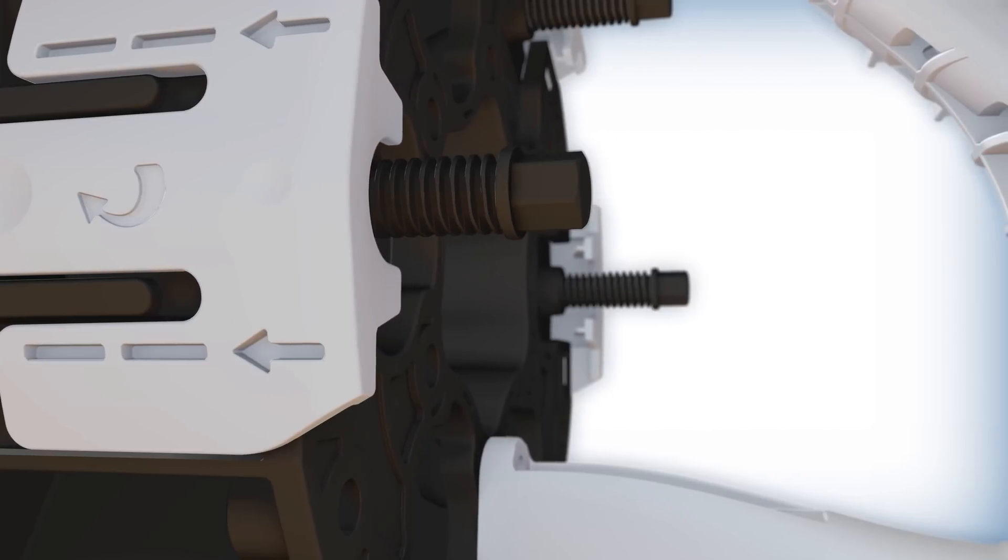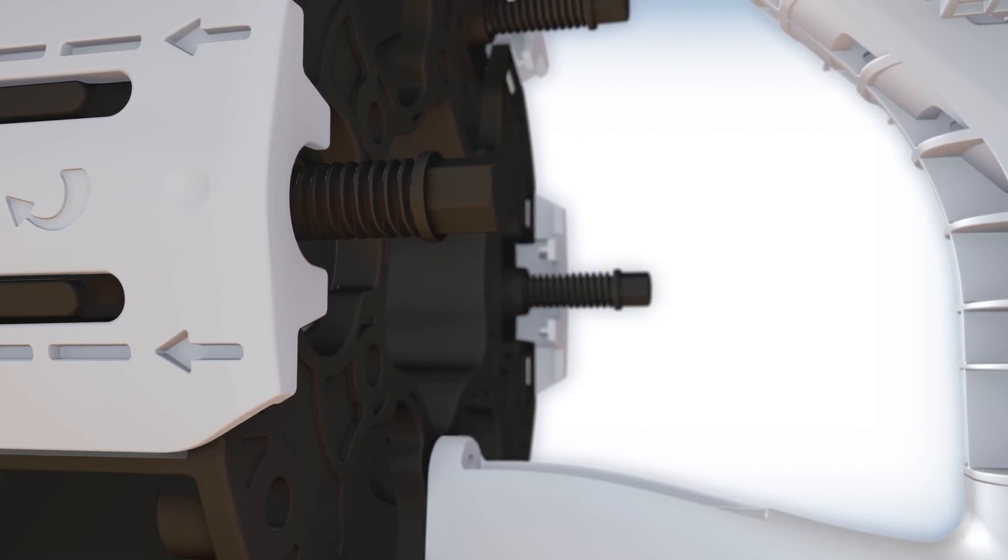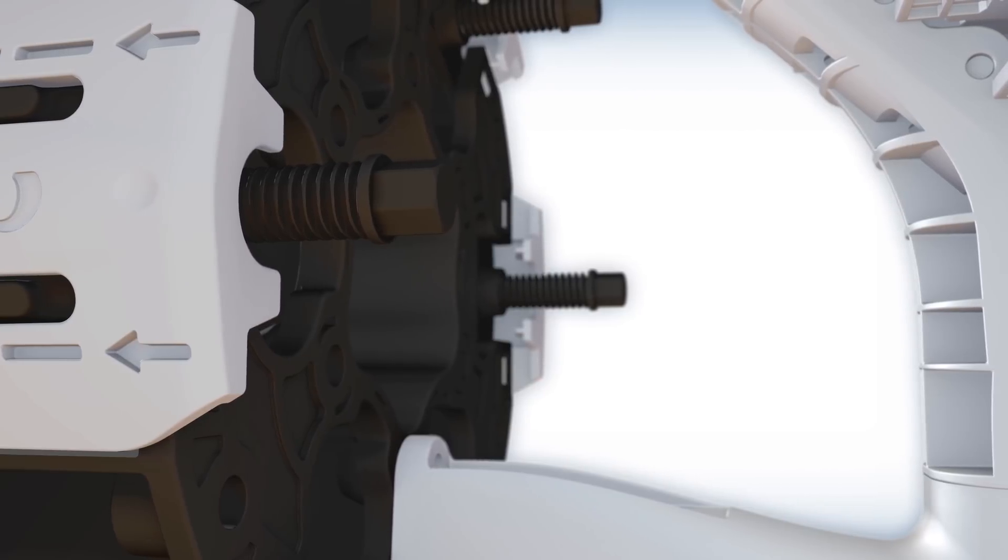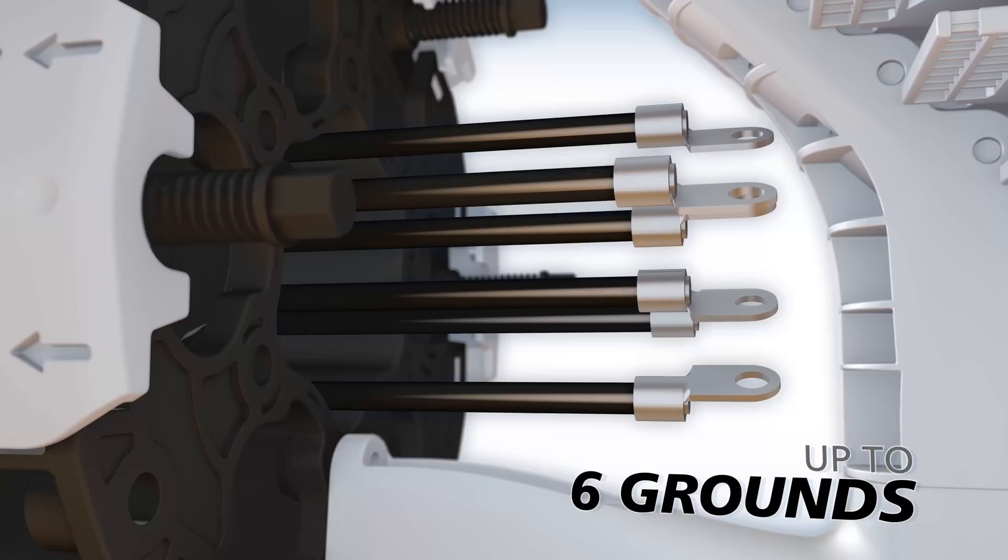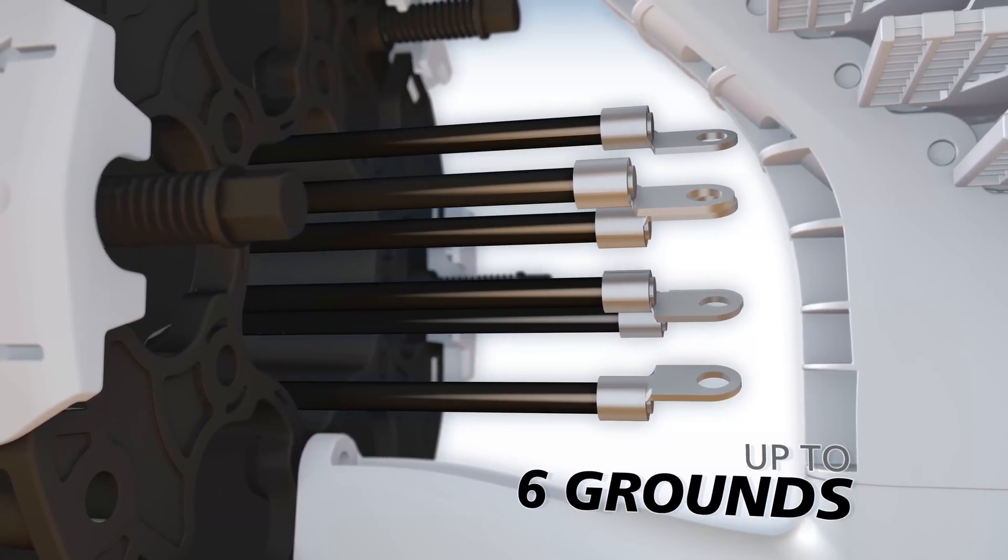Apex fiber optic closures are configured with as few as zero grounds for installation of ADSS cables or as many as six in case each cable port requires its own isolated ground.